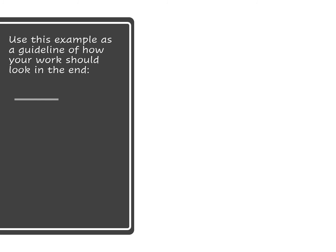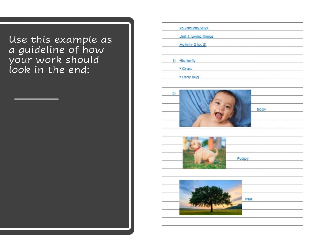Use this example as a guideline of how your work should look in the end. Firstly, write the date — 26 January 2021. Underneath that: Unit 1, Living Things. And underneath that: Activity 2, page 2. Then skip a line. Number 1: name the 3 things that you went and found outside. Number 2 you will not number on your page, as that is the part where you look through the magazines. And then number 3: paste your 3 pictures and write the names of the living things next to them.